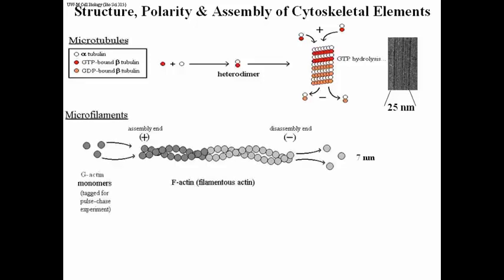Microfilaments are composed of actin monomers called G-actin, meaning globular actin. Remember that polypeptides can be globular or fibrous. G-actin is globular actin. These are the monomers. They can be radioactively labeled for an experiment. And you can show that there's an assembly end.